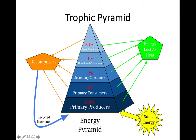Secondary consumers receive 10% of that energy — this would be a carnivore that feeds on an herbivore. This continues up the pyramid, and that's why we call this a trophic pyramid.